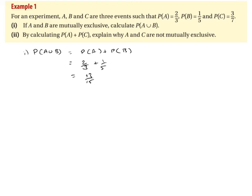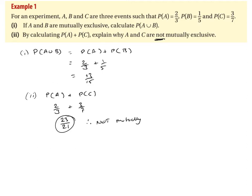The second part asks us: by calculating the probability of A plus the probability of C, explain why A and C are not mutually exclusive. So the probability of A plus the probability of C is two thirds plus three sevenths, which gives 23 over 21. Now there's an issue here because we know by the first axiom that the probability must be less than or equal to 1. This does not meet that criteria — therefore A and C are not mutually exclusive.